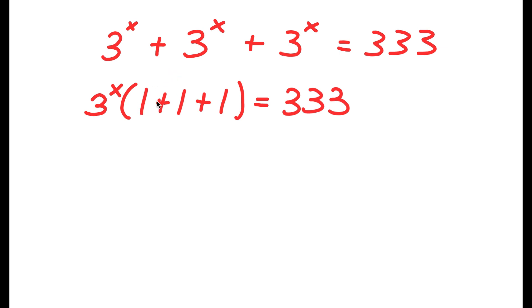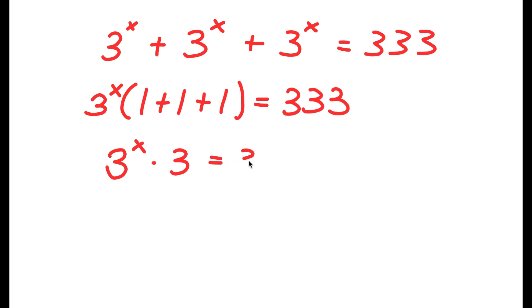Now I'm going to solve what's in my parentheses. I have 1 plus 1 plus 1, that's equal to 3. So now I get 3 to the power of x times 3 is equal to 333.